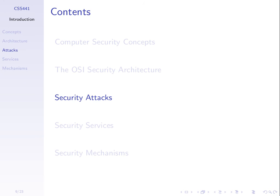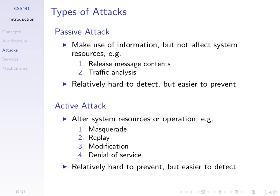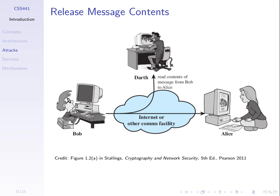Let's classify security attacks. We'll have a first classification into two types: passive versus active attacks. Within passive attacks there are two types — release of message contents and traffic analysis — and four types of active attacks: masquerade, replay, modification, and denial of service. That's six in total. The pictures here are from the textbook to illustrate these six types of attacks on network security.